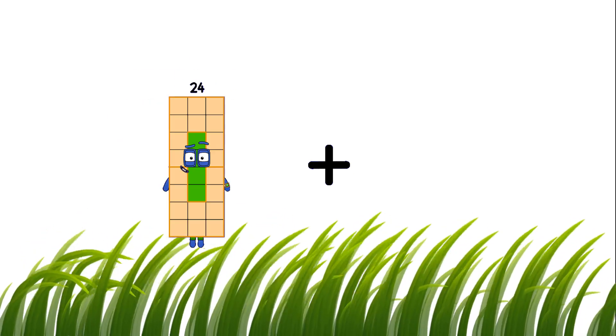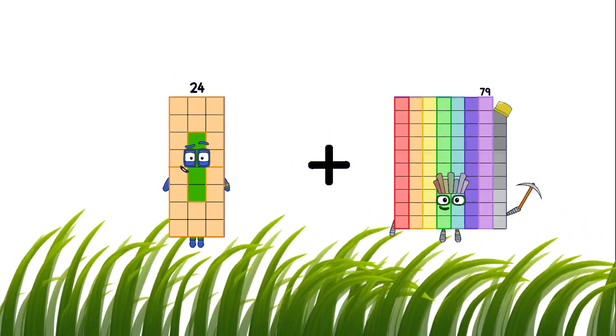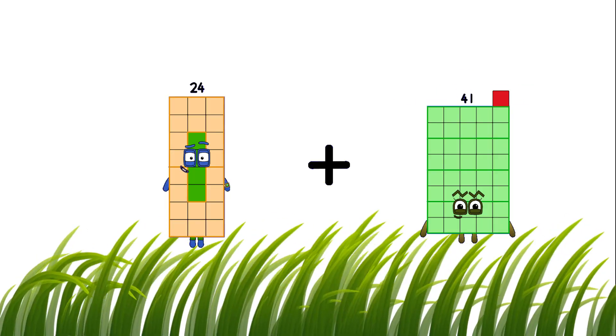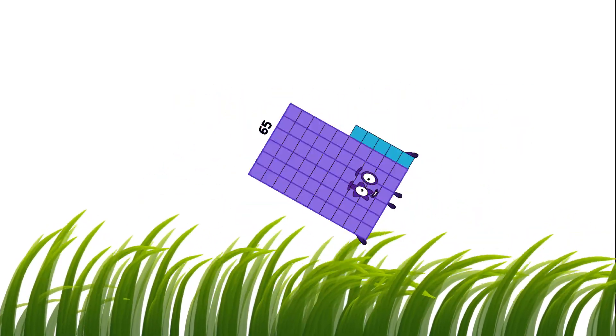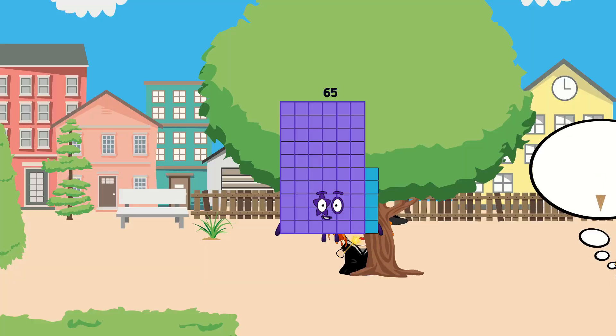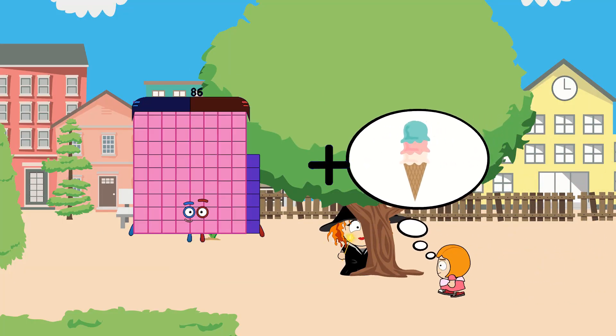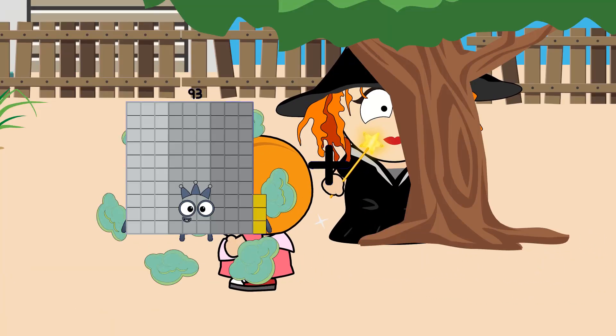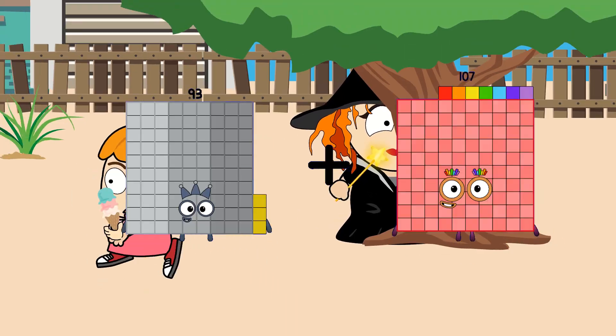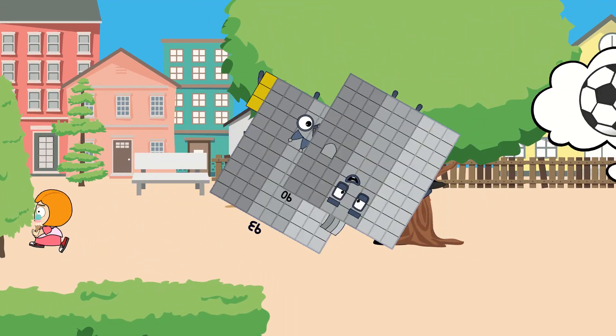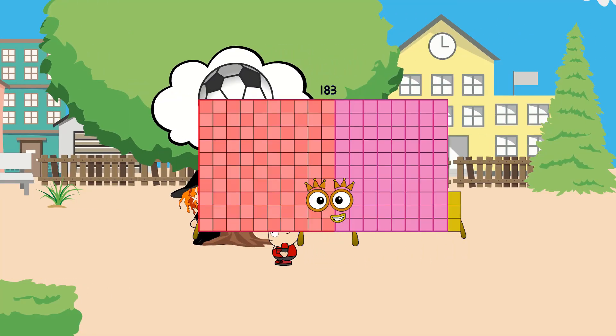24 plus 41 equals 65. 93 plus 90 equals 183.